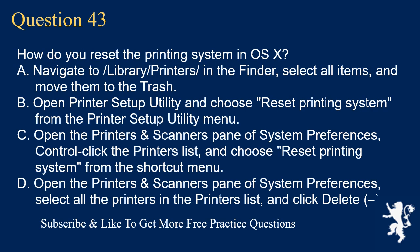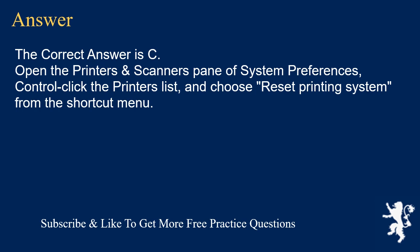Question 43. How do you reset the printing system in OSX? A. Navigate to /Library/Printers/ in the Finder, select all items, and move them to the trash. B. Open Printer Setup Utility and choose Reset Printing System from the Printer Setup Utility menu. C. Open the Printers and Scanners pane of System Preferences, control-click the printers list, and choose Reset Printing System from the shortcut menu. D. Open the Printers and Scanners pane of System Preferences, select all the printers in the printers list, and click Delete. The correct answer is C: Open the Printers and Scanners pane of System Preferences, control-click the printers list, and choose Reset Printing System from the shortcut menu.